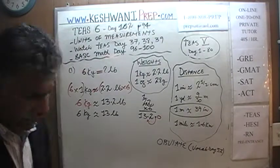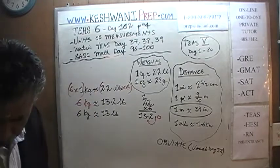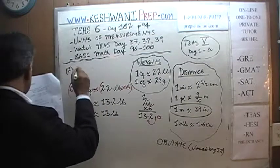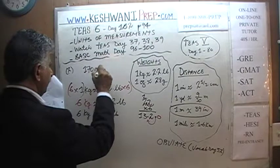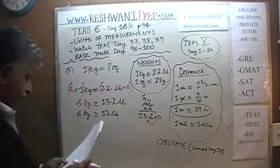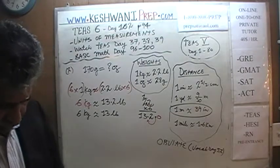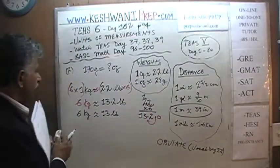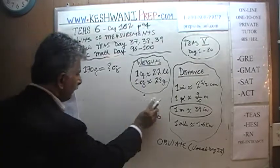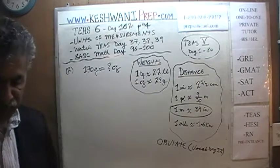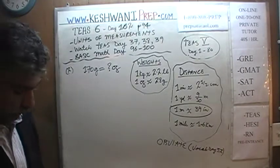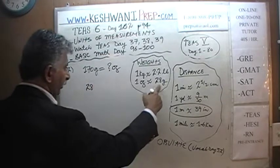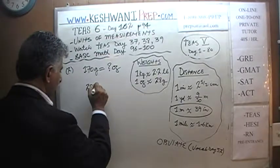Question number two: how many ounces make 170 grams? Our starting point is what we know: one ounce is approximately 28 grams. We have to be a little more flexible in our thinking. Let's start with 28 grams is approximately one ounce — that's what we know.